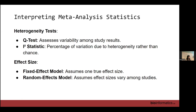We have the Q-test or chi-square test — that is a yes or no: is there heterogeneity across the datasets? Then we have the I-squared statistic, which is in percentage and shows the variation due to heterogeneity across datasets. Based on that, we decide between fixed effects and random effects.